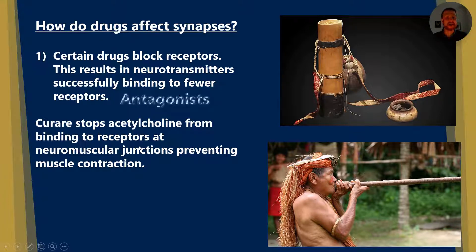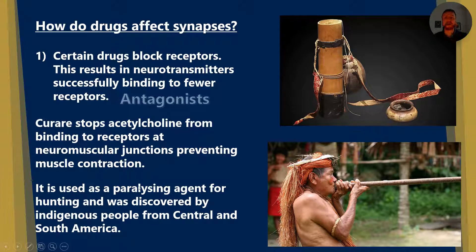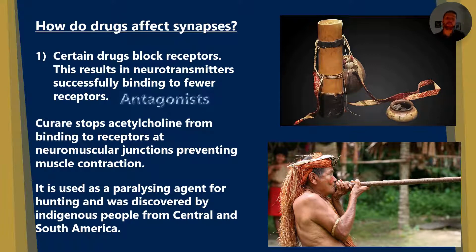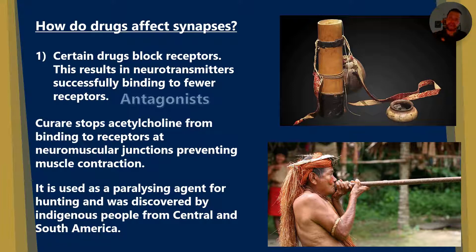This is therefore going to stop muscle contraction. It was used as a paralyzing agent for hunting in poison arrows and darts, and was discovered by indigenous people from Central and South America. It works by paralyzing the muscles, which will lead to organ failure — because remember, the heart is a muscle — and then death.